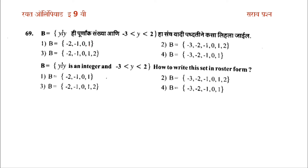b is equal to {−2, −1, 0, 1} and b is equal to {−3, −2, −1, 0, 1, 2}. Checking the condition: y minus 3 equals minus y, then minus 3 equals 1 minus 2. Then minus 2 equals minus 1, then another one is 0. So this is the set: b is equal to {−2, −1, 0, 1}.